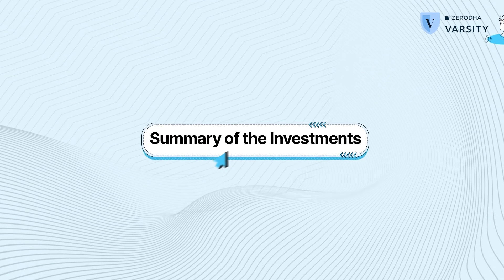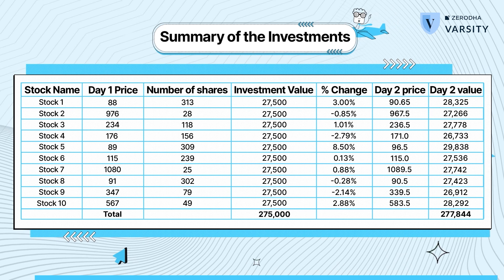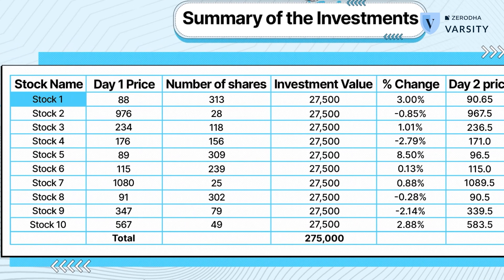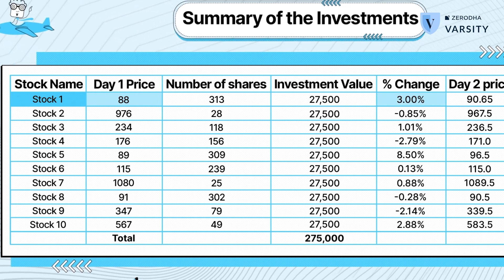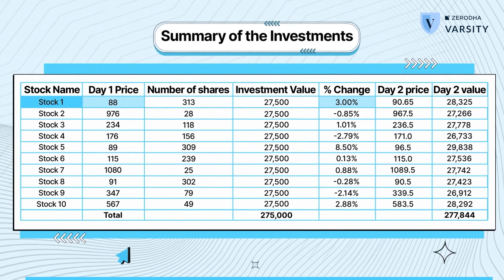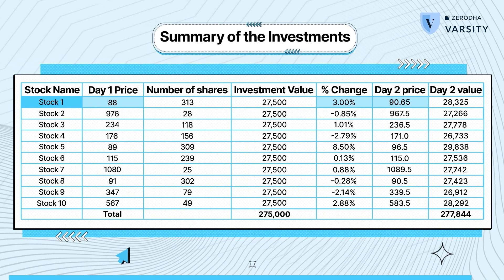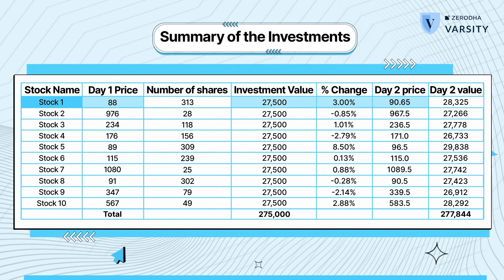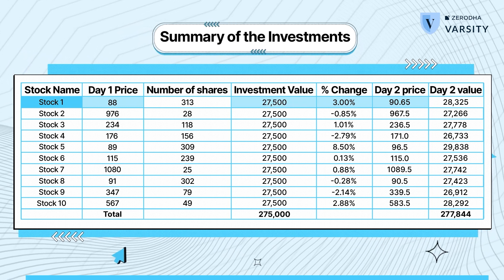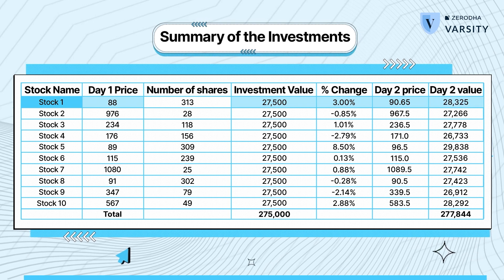On day 1, at market open, the fund manager deploys the entire corpus of 2.75 lakhs. As the day progresses, the stock prices change. Stock 1 at the start of the day was trading at 88 rupees per share. By the end of the day, there was a 3% increase and the stock is now trading at 90.65. Which also means that the money invested in stock 1 — that is 27,500 — also grows by 3% and the value becomes 28,325.